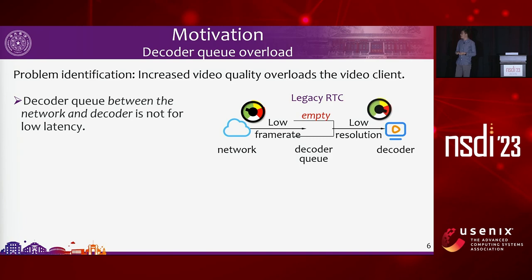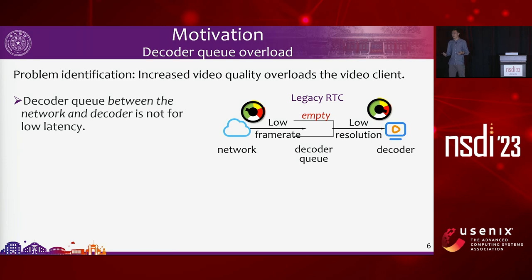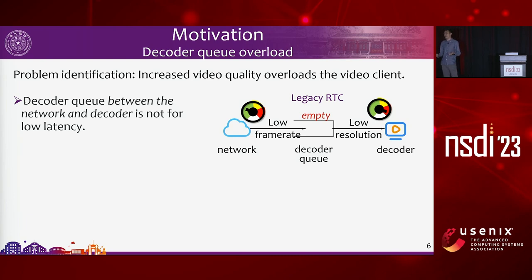The observation from our paper is that increased video quality can overload the video client. In legacy RTC, the network stack and video decoder are two separate processes with a buffer — the decoder queue — between them. With a low frame rate, the arrival rate is low (e.g., 5–10 FPS), and decoding speed is fast, giving a high departure rate. With low arrival rate and high departure rate, the decoder queue stays very empty.